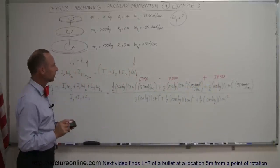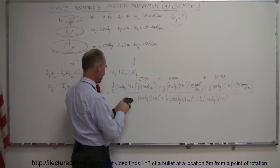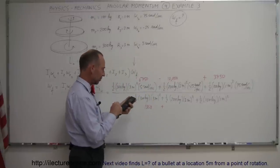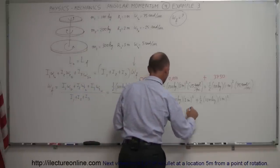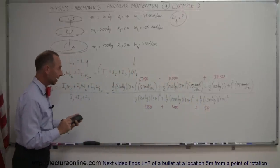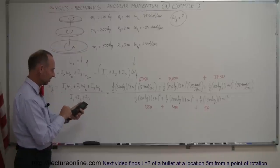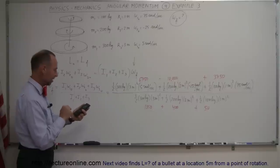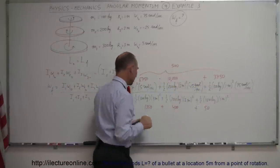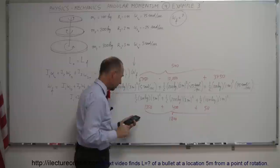Now dividing by the denominator: 300 × 0.5 × 9 = 1,350, plus 200 × 0.5 × 4 = 400, plus 100 × 0.5 × 1 = 50. Adding the numerator: 6,750 minus 10,000 plus 3,750 gives a positive 500. The denominator totals 1,800. So we have 500 divided by 1,800.